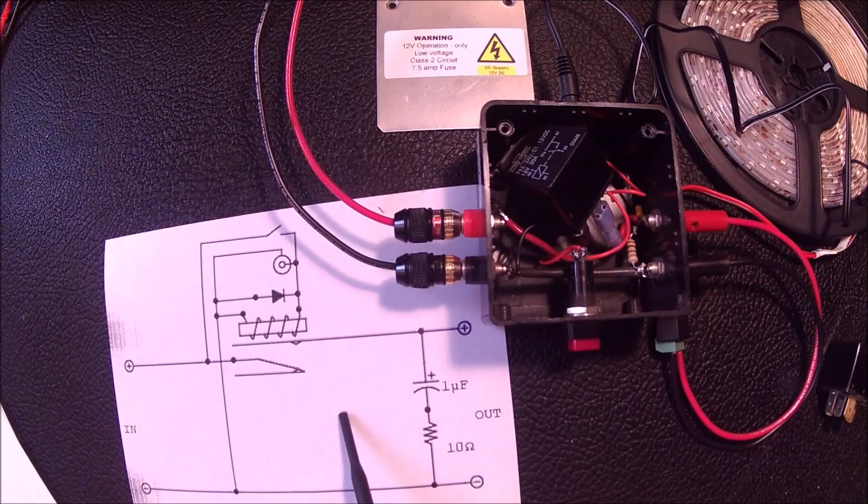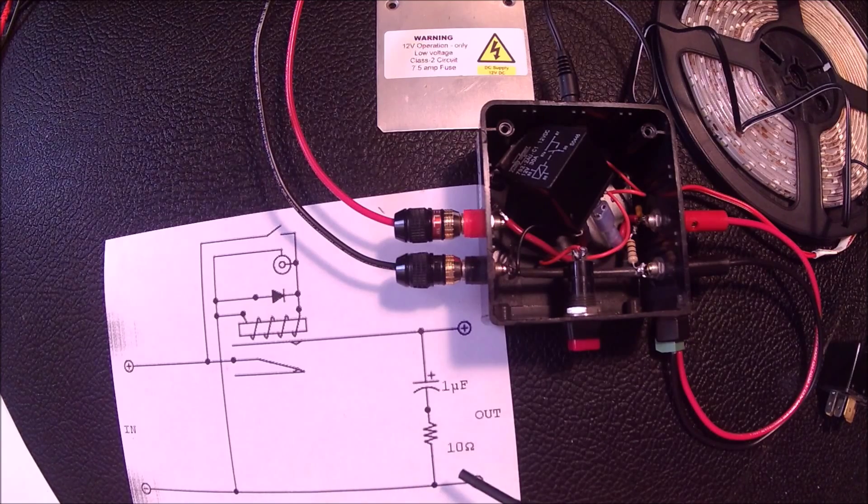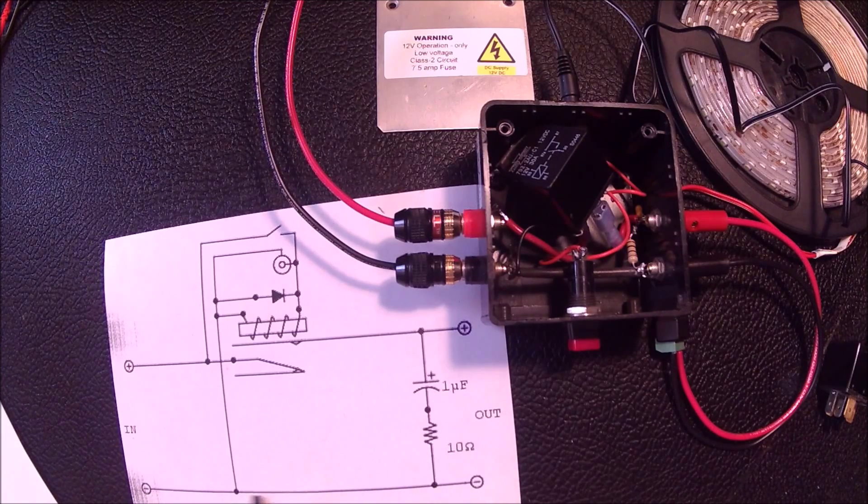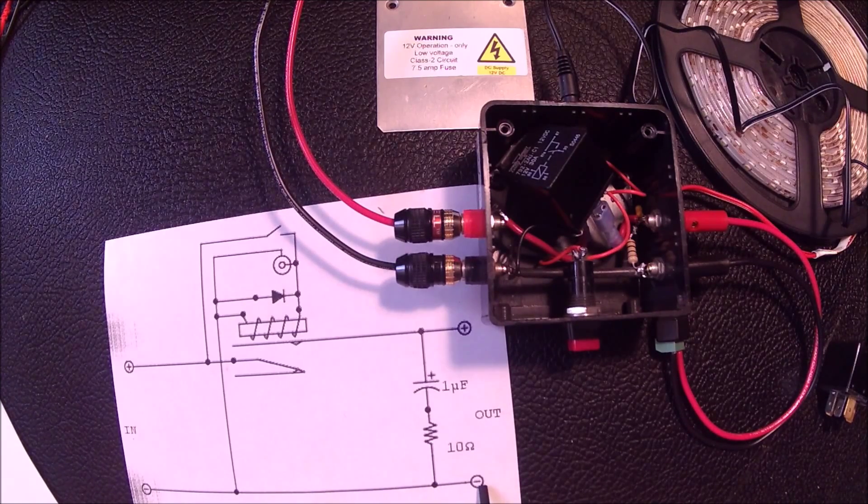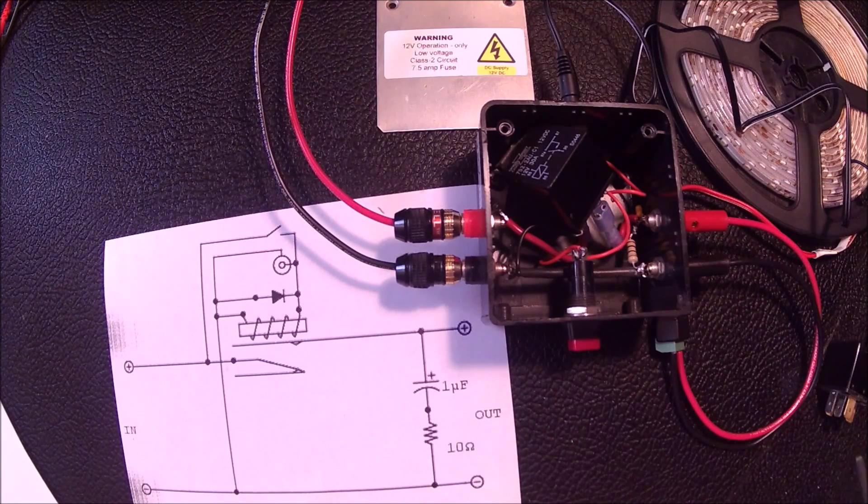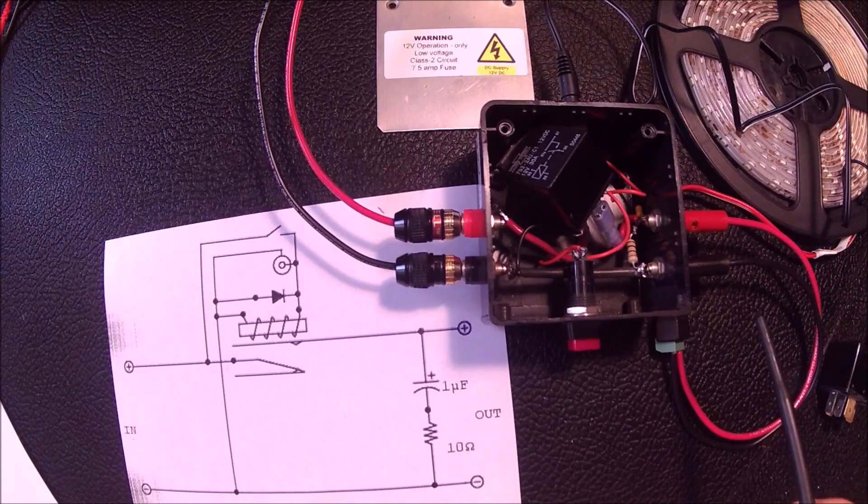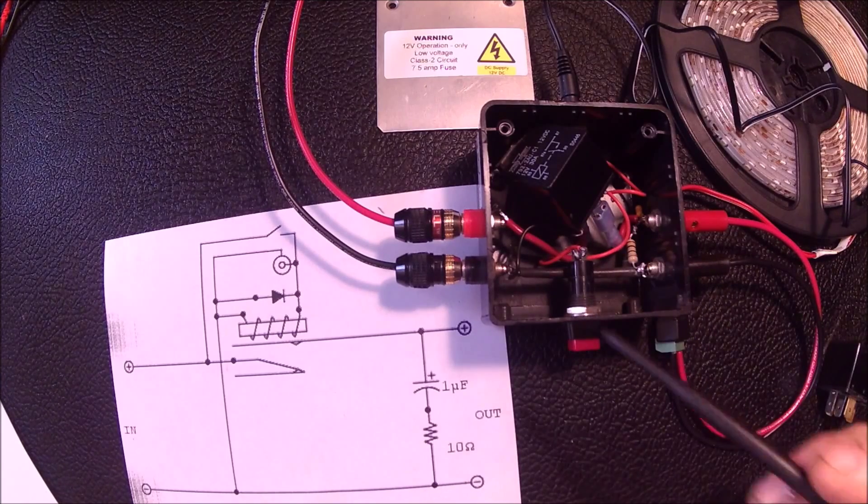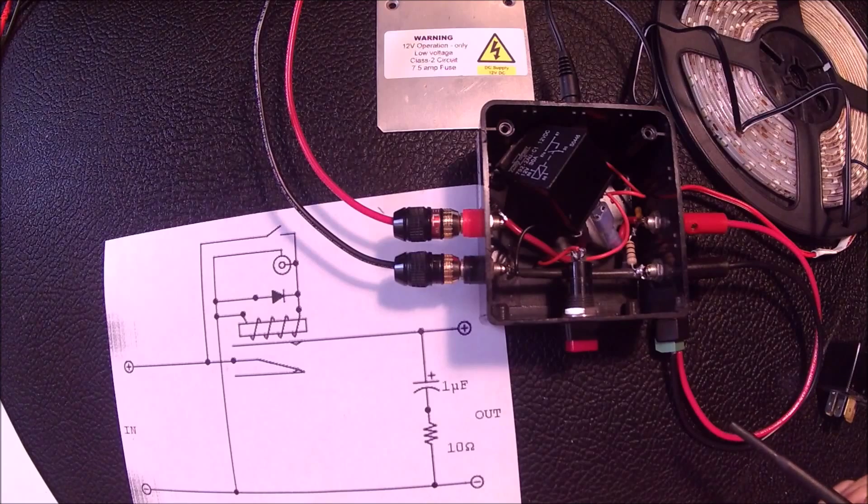So for the wiring specifics I have this simple schematic here we can look at. As you can see the negative connection goes straight through the box. You can see that inside the box there. And then I tie the relay coil and remote negative connection to this same negative terminal right there.